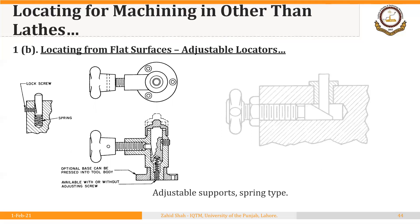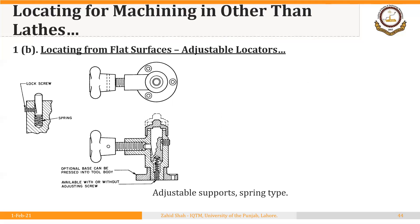Apart from threaded types, we can have spring-type adjustable locators. The workpiece rests on the locator. There is a spring inside that allows the locator to move up and down depending upon the variation in the surface of the workpiece. After the workpiece settles on the locator, we can lock the spring in position. From the diagram you can see the spring clearly — once the workpiece settles, we lock the locator in position.